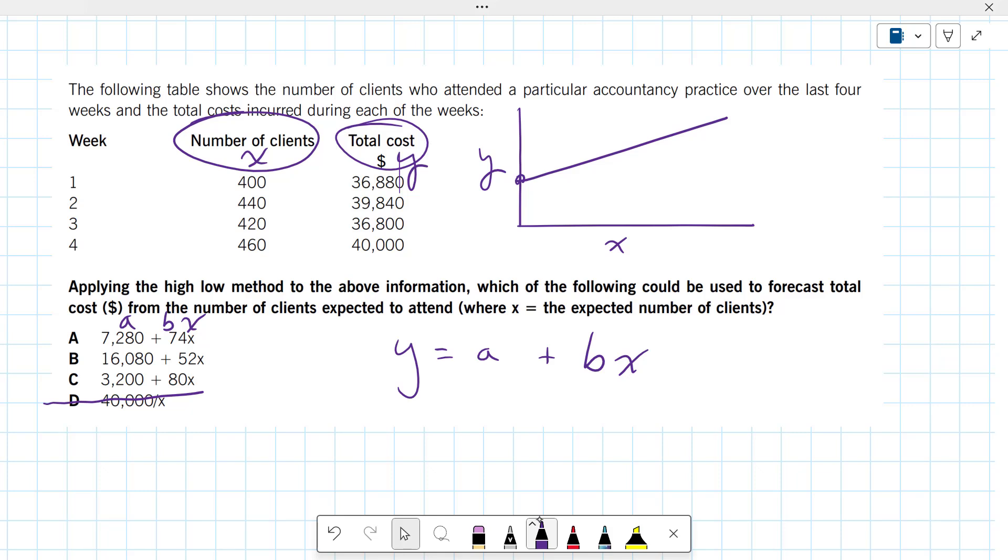Let's now solve this problem using this high-low method. Well, we have some data here. Let's go back to the data. What we're going to do is make an assumption. I'm going to pick out the high number of clients, which I see is 460. So let's just put this here. Let's imagine this is 460, not to scale. That would be a high, and then we have a low. Let's say that's 400.